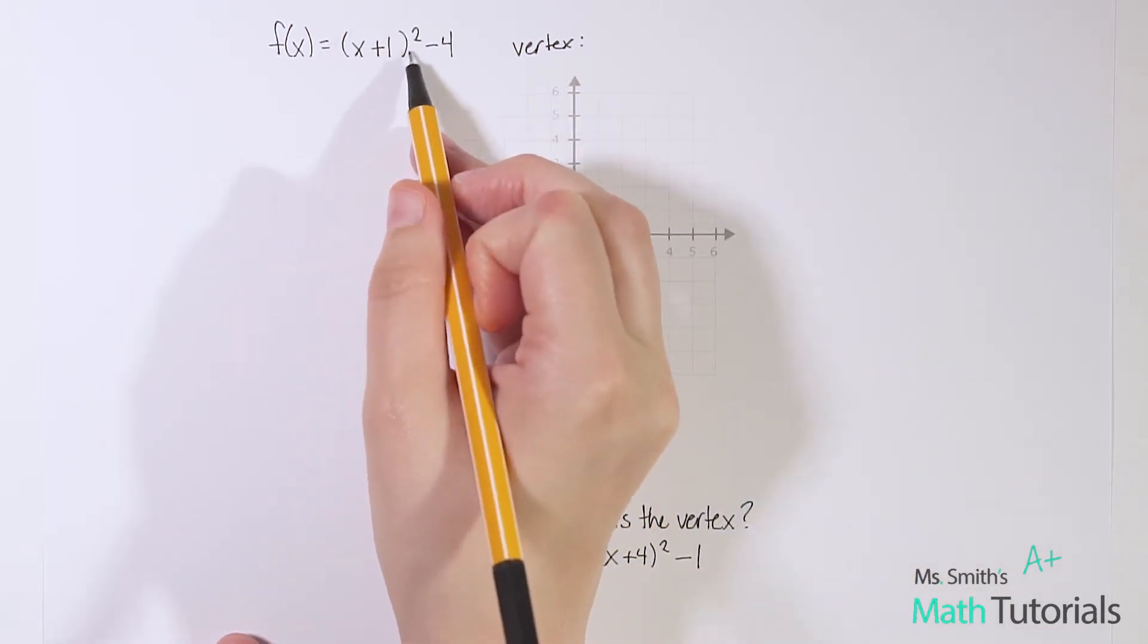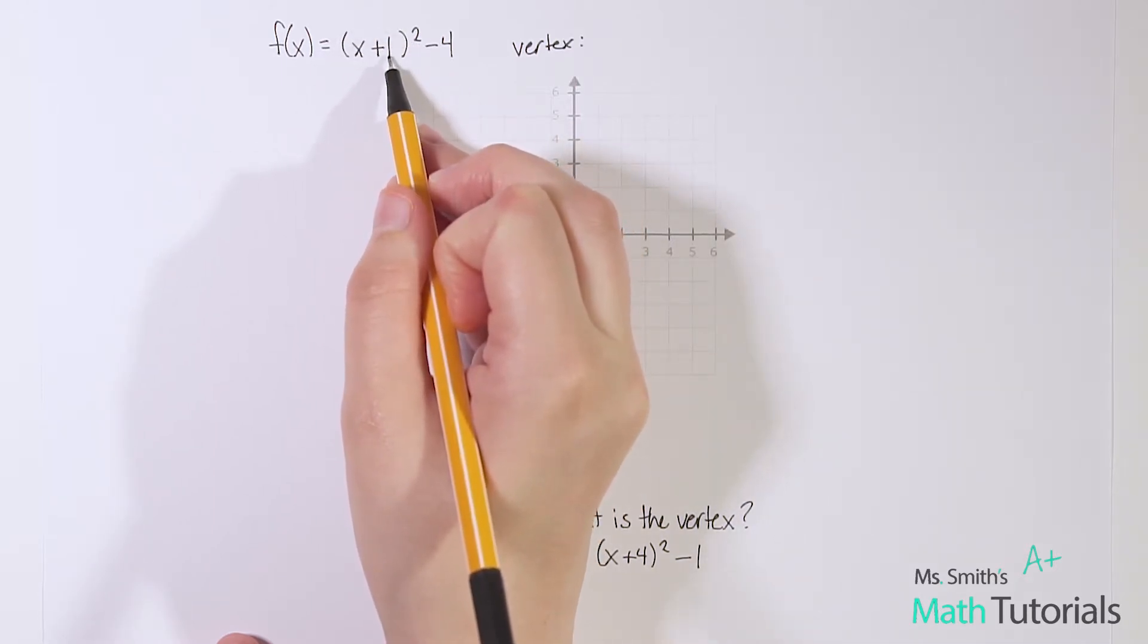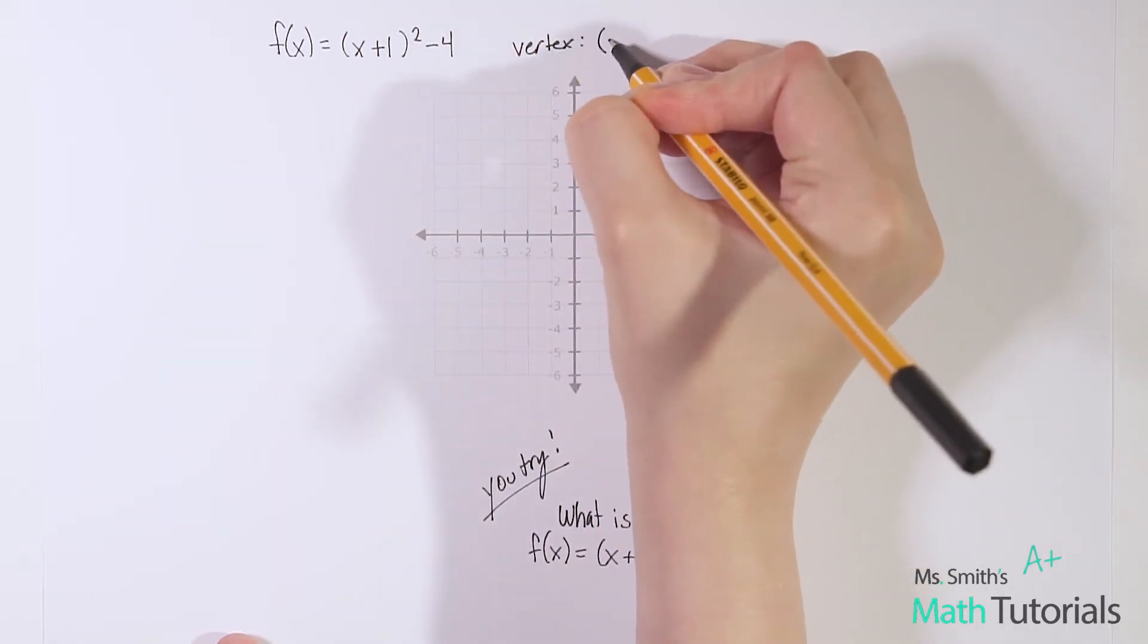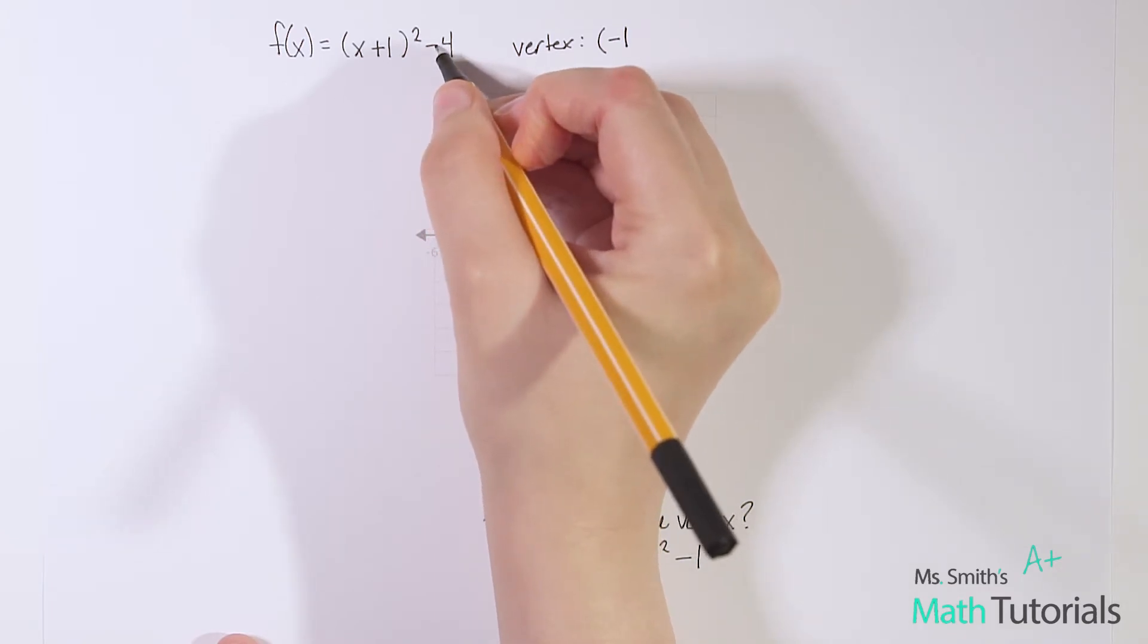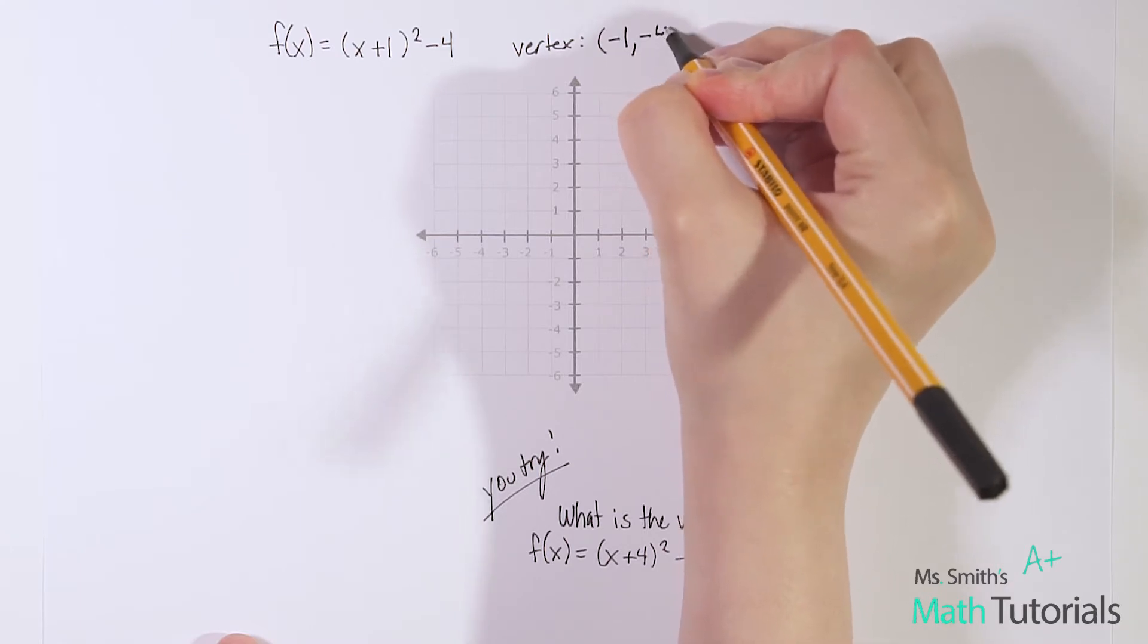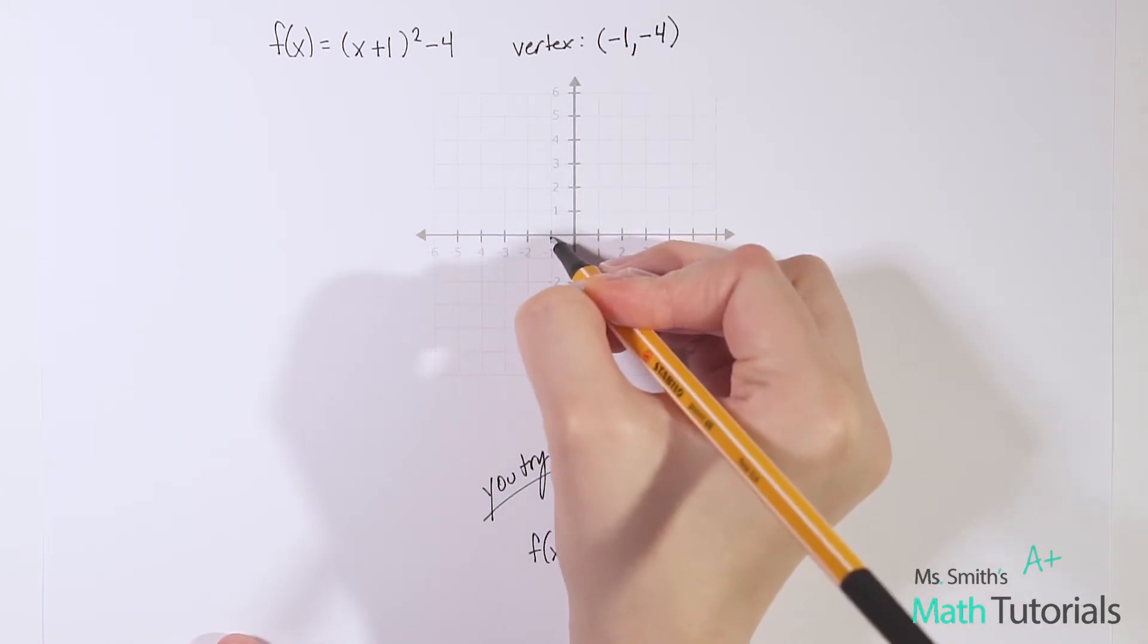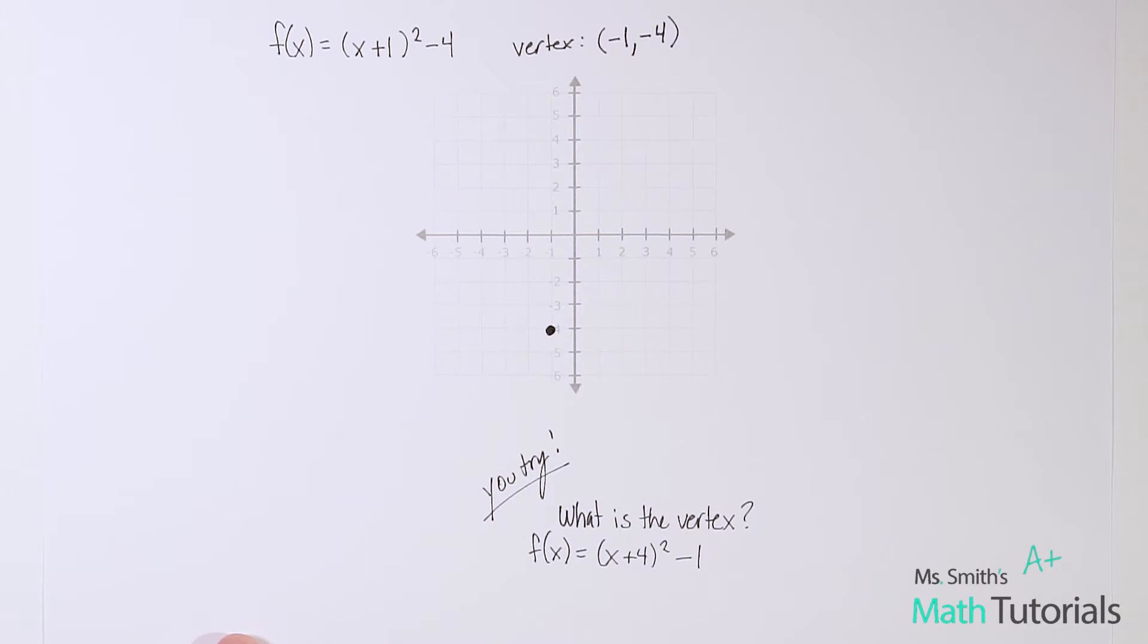So all I have to do is say, what's on the inside of the parentheses with the x, in this case, plus 1. And let me take the opposite sign of that. So negative 1. Now what's on the outside of the parentheses, minus 4. That's my y value. So minus 4. That one's the true sign. So I can go ahead and plot my vertex right now. Negative 1, negative 4. Right there.